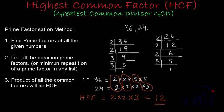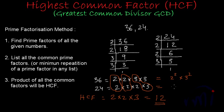Here we have a note inside the bracket: the minimum repetition of a prime factor in any list. If I write all the factors of 36 using exponents, this can be written as 2² × 3², since 2 and 3 are each repeated twice. And 24 can be written as 2³ × 3¹.